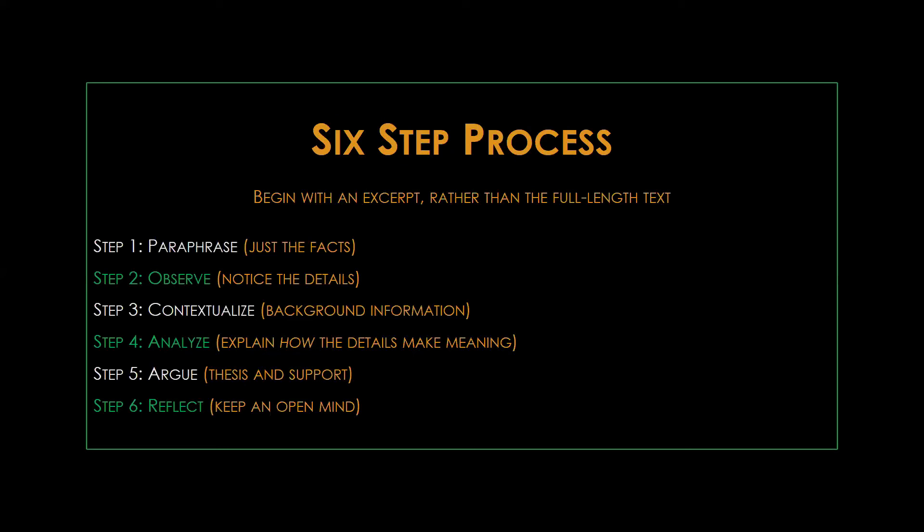Step one is paraphrase. Explain the passage in your own words. What's going on here? What does it say? For this step, you want to stick with just the facts. Don't try to interpret yet. Keep it really literal. Step two is observe. Notice the details. Look for significant words, surprising or meaningful language or sentence construction, unexpected or important patterns. You've already practiced this with your poetry explications, and you'll be using some of those same techniques here.